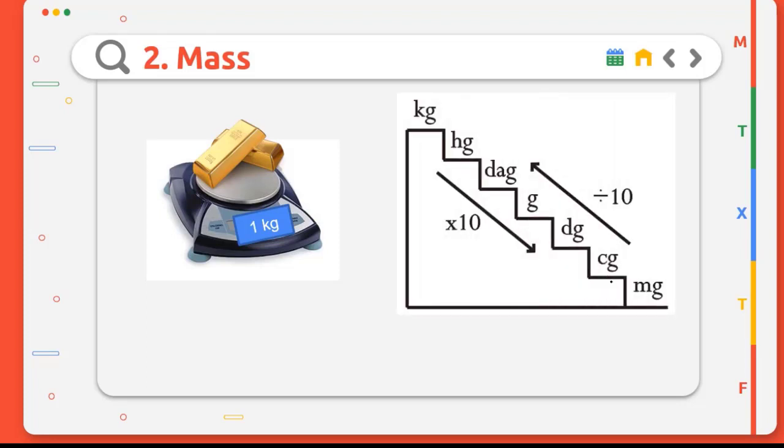This gold bar has a mass of 1 kg or 1 kilogram. If you want to do converting from kilograms to another unit measurement, we do it like the previous converting. From kilograms to grams, we go down three steps, so we multiply by 1000. 1 kg equals 1000 grams.